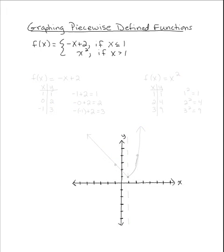Here we are going to look at graphing piecewise defined functions. Now the given problem that we are going to work with is as follows. It shows us that f of x equals negative x plus 2 if x is less than or equal to 1, or x squared if x is greater than 1.